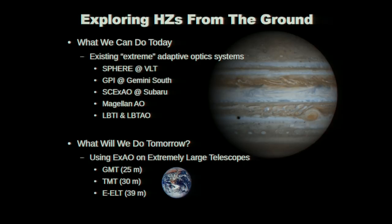I'll tell you why that's interesting in a little bit. So what I'm going to talk about today is, first of all, what we can do today, right now, what we're already doing using existing so-called extreme adaptive optic systems. In particular, I work on the Magellan AO system, but there's also Sphere and GPI, Skeks AO, and the LBT systems. But then we're going to switch to what we'll do tomorrow, using extreme AO on extremely large telescopes.